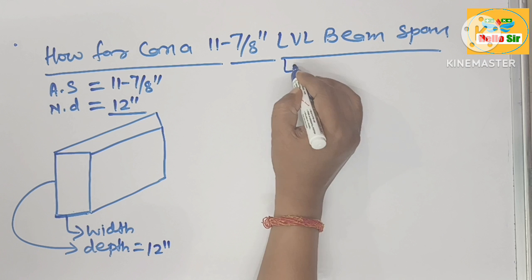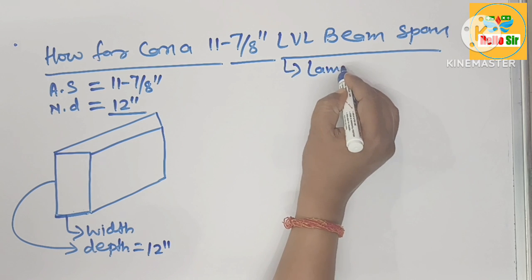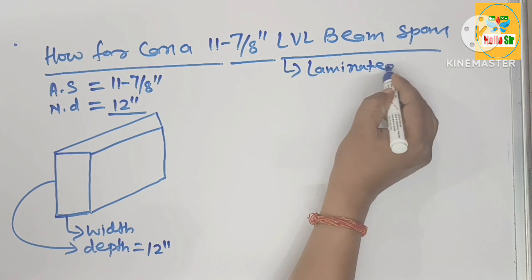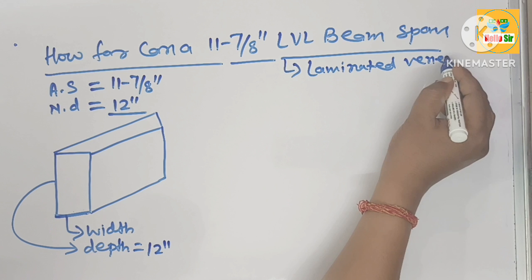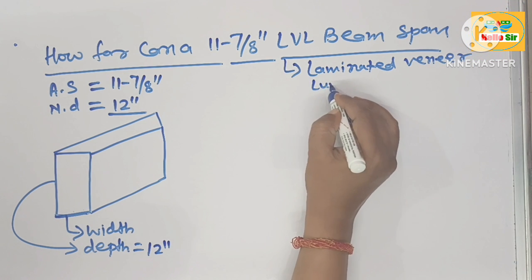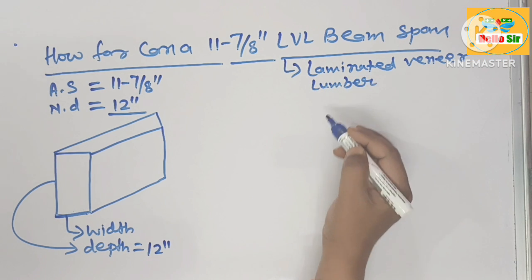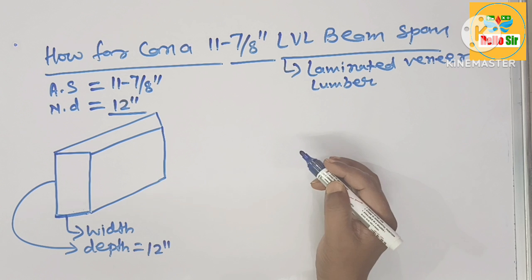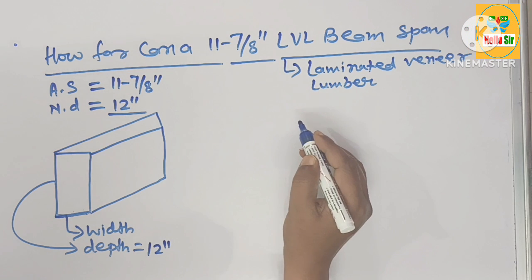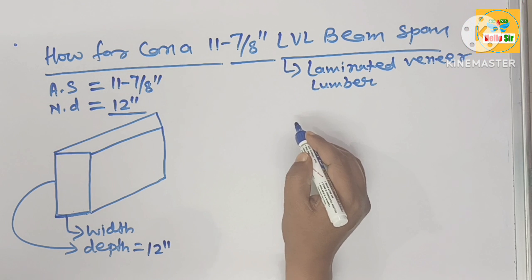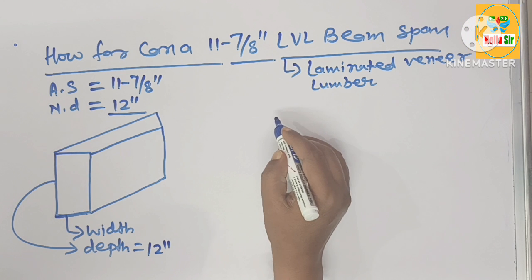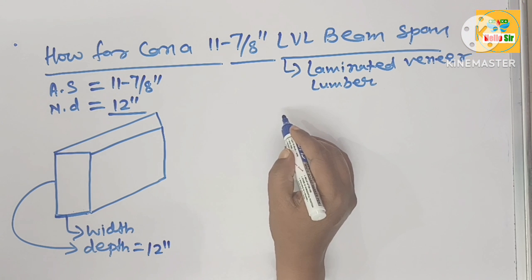You know that LVL is laminated veneer lumber. It is a linear wood product made by thin sheets of wood with adhesive material. It has high strength and is used in building construction as beams.